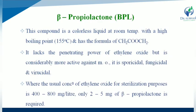Beta-propiolactone (BPL) is a colorless liquid at room temperature with a high boiling point (about 155°C) and has the formula CH₂COOCH₂. It lacks the penetrating power of ethylene oxide but is considerably more active against microorganisms.